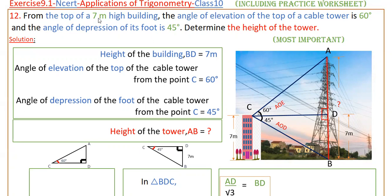From the top of a 7 meter high building, the angle of elevation of the top of a cable tower is 60 degrees. So here the building height is given — that is a 7 meter high building — and from the top of this building, that is point C, if you see the cable tower, the top of the cable tower is point A.